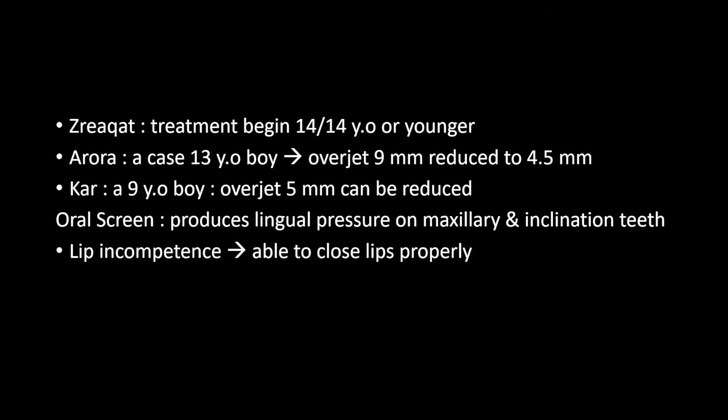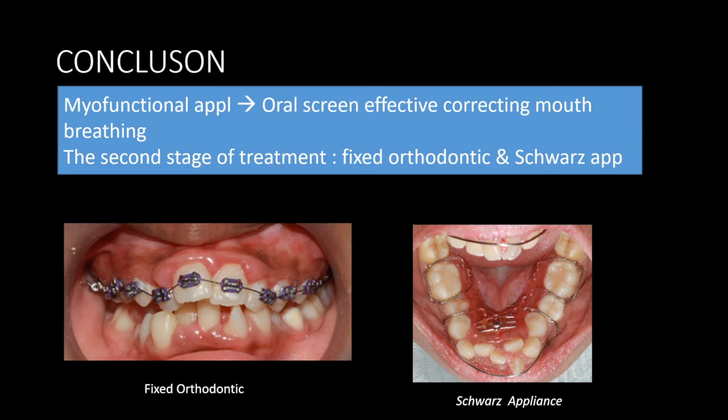Lip incompetence occurs in children with mouth breathing. In this case report, after using an oral screen, the patient was able to close her lips properly. As a conclusion, the functional appliance — the oral screen — is proven to be effective for correcting bad habits of mouth breathing. In this case report, the second stage of treatment was using a fixed orthodontic appliance and Schwarz appliance.